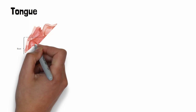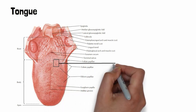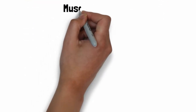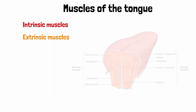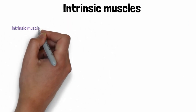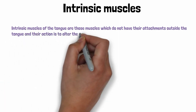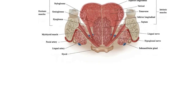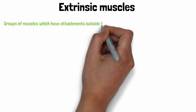The tongue, which forms much of the floor of the oral cavity, is a muscular organ that helps in speech, swallowing and breathing. It also contains specialized mucosa responsible for taste sensations. There are two sets of muscles that control the movement of the tongue: intrinsic muscles and extrinsic muscles. Intrinsic muscles of the tongue are those muscles which do not have their attachments outside the tongue, and their action is to alter the shape of the tongue. Extrinsic muscles of the tongue are those groups of muscles which have attachment outside the tongue and therefore their actions alter the position of the tongue.